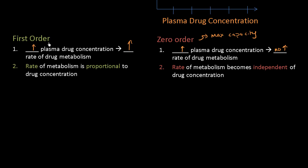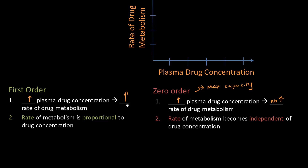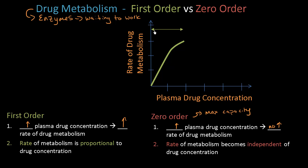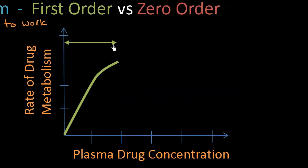Let's start by drawing first order elimination. As the plasma concentration goes up, we expect the rate of drug metabolism to go up as well. On the graph, as I move to the right — increasing plasma drug concentration — we expect the rate of drug metabolism to go up, and that is what we see. This is happening at the lower plasma drug concentrations: this is first order kinetics, or first order elimination.